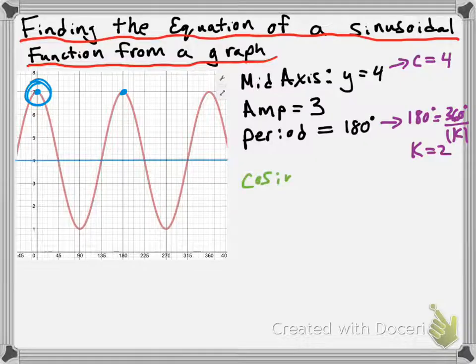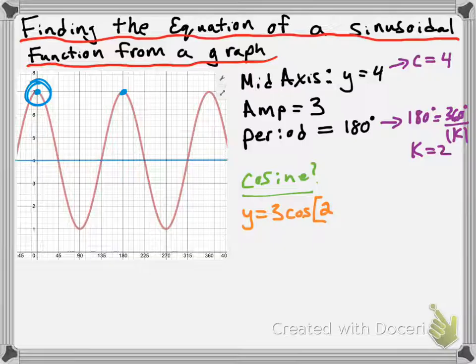So let's see what would happen if we were trying to model this with a cosine function. We would have y equals — since it's a cosine function and it starts at its maximum, we don't need a negative value for our a value. So since our amplitude is 3, we're going to take our a value to be positive 3. Since it's a cosine function, we're going to have 3 times the cosine of 2 — because that's our k value. Since this graph already starts at its maximum value, we're not going to have to shift it left or right at all. This function doesn't need a phase shift. So we're going to have 2x, and then the only thing we're missing is the c value which we know is 4, so plus 4. One possible equation is y equals 3 times the cosine of 2x plus 4, and that equation would be correct.